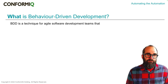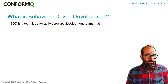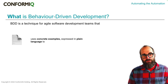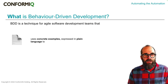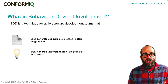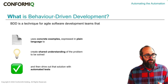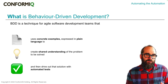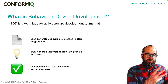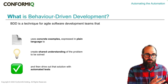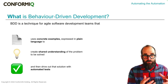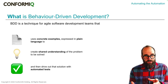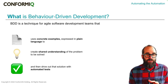So what is BDD? BDD is a technique for agile software development teams that uses concrete examples expressed in plain language to create shared understanding of the problem to be solved, and then drive out that solution with automated tests. We use this process of distilling the problem down into concrete examples to create shared understanding between the people working on the project, then express those examples in a way that the computer is able to understand them and run them as automated tests.